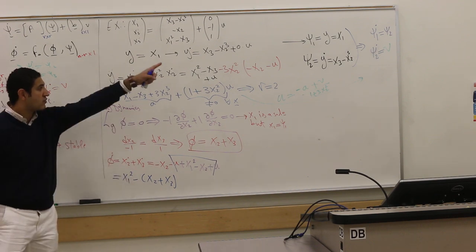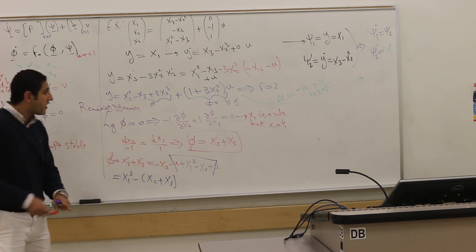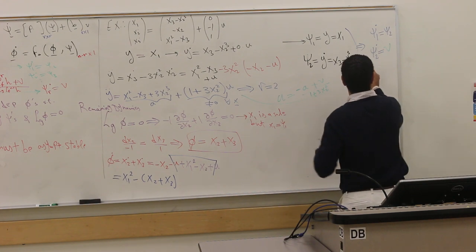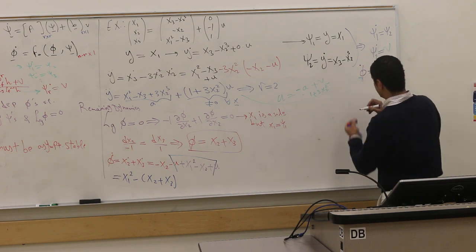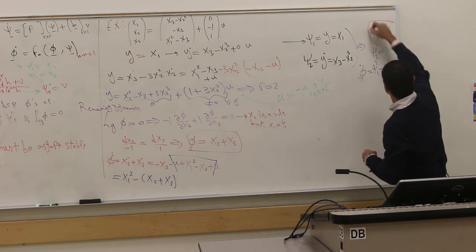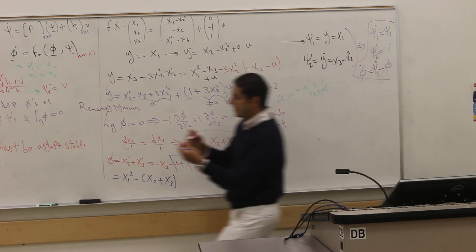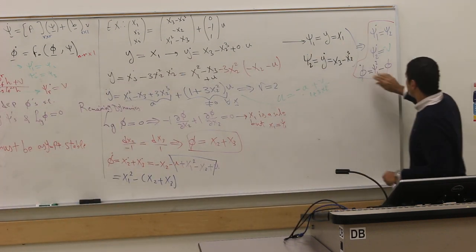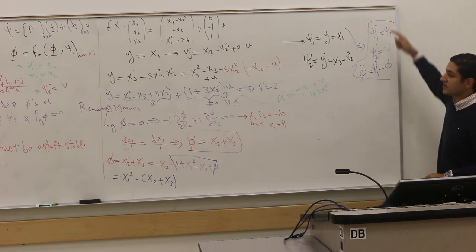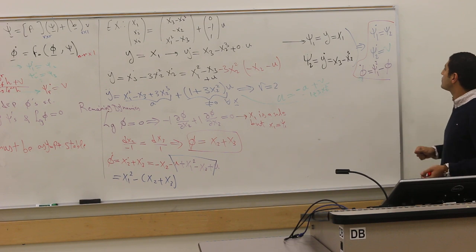Please write it in the new coordinates. x₁² in the new coordinates is ψ₁². x₂ plus x₃ together are φ. Here is the unobservable dynamics: φ dot is ψ₁² minus φ. This is my transformed system. I found the transformation that gets me from x to two pairs: ψ where the dynamics is purely linear, and φ that is unobservable and has no input effect. It evolves on its own.